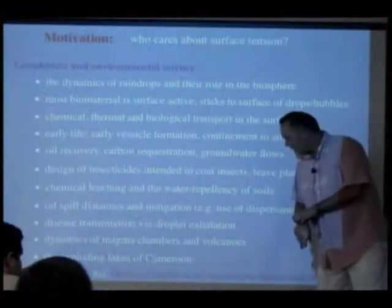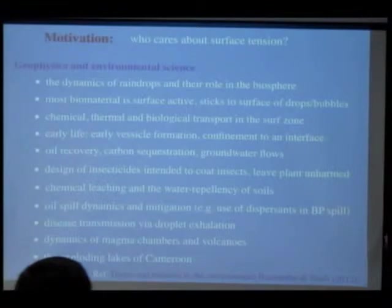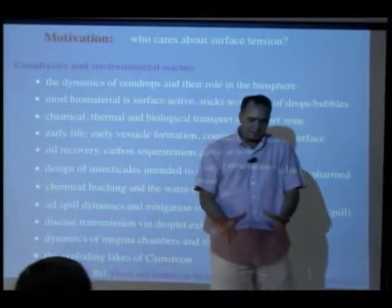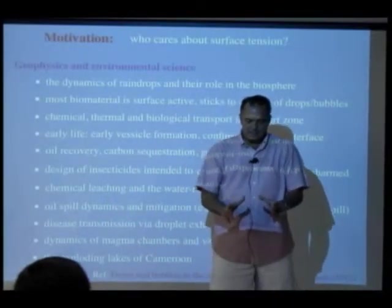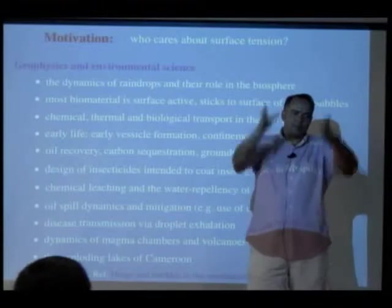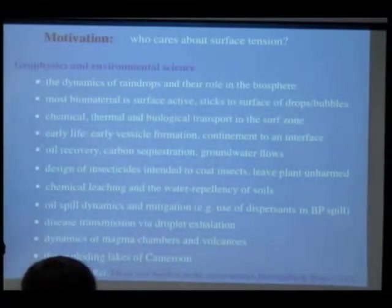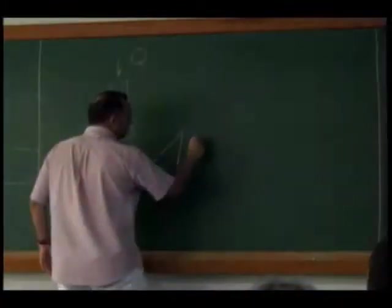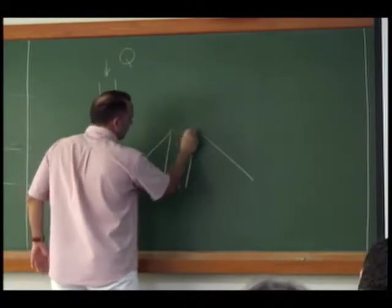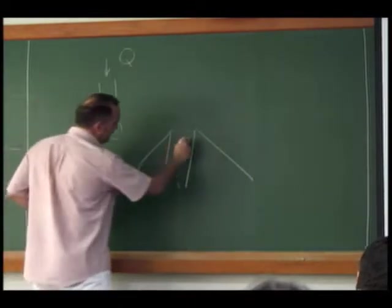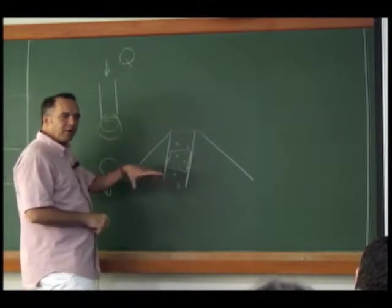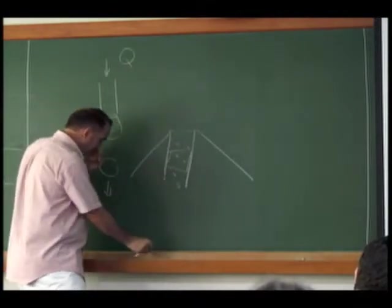Dynamics of magma chambers and volcanoes is another geophysical setting where surface tension comes in. If you have a volcano, it's degassing — pressure decreases as magma rises, gas comes out of solution, and you have a bubbly column of fluid. This two-phase flow can create substantial bubble volume fractions that fill the entire column, giving rise to regular eruptions as fluid and gas are expelled.